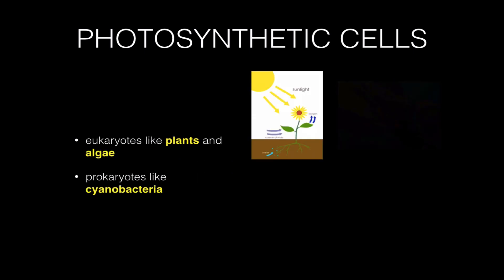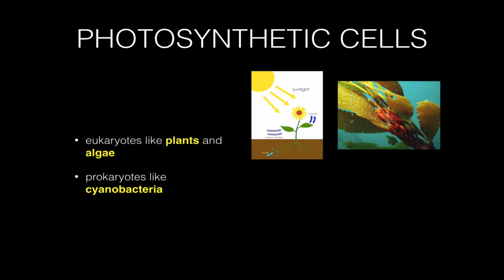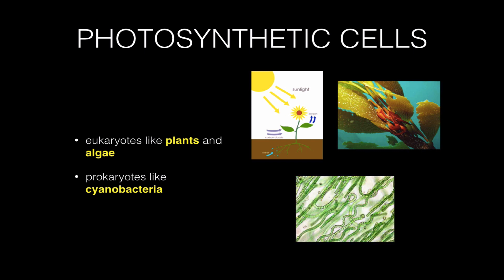There are also algae, like this picture of a very large algae called kelp which lives in the ocean. And there are bacteria called cyanobacteria that are capable of doing photosynthesis and being just as productive and just as autotrophic as green plants.